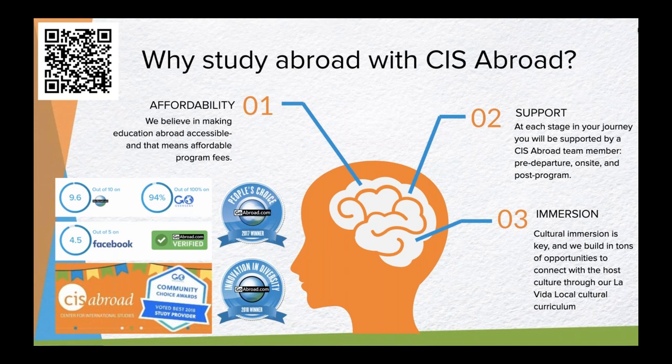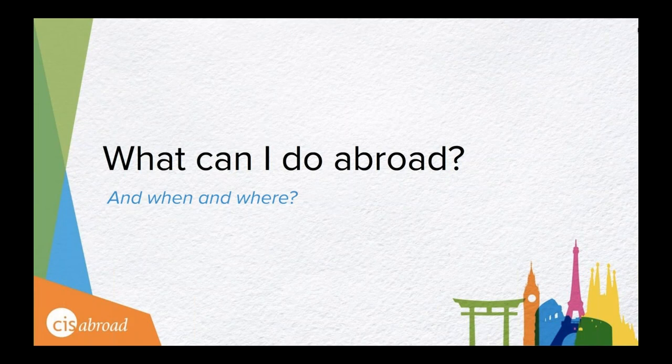So what can I do abroad, and when and where? CIS Abroad offers 120 programs in 22 countries around the world that can accommodate 88 different majors. We want to give you a snapshot of what's available on different continents. Let's start with our programs in Europe.